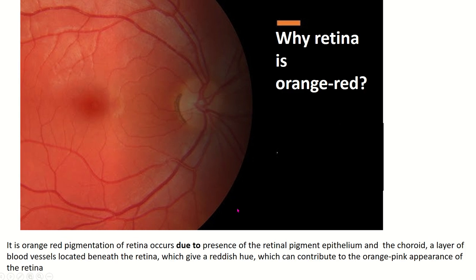Why is the retina orange-red? The orange-red pigmentation of the retina occurs due to the presence of retinal pigment epithelium and the choroid, a layer of blood vessels located beneath the retina, which gives a reddish hue contributing to the orange-pink appearance of the retina.